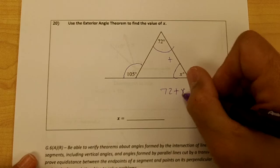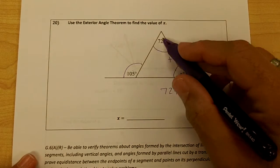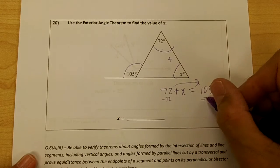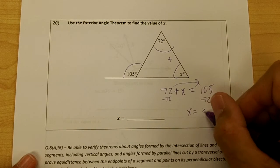So 72 plus x equals 105. And this is something you just have to know. To solve for x, I'm going to isolate the x, and I would get x equals 33.